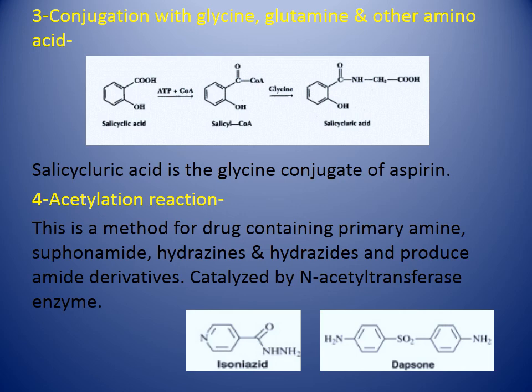The third type is conjugation with glycine, glutamine, and other amino acids. The example of salicylic acid is given, which forms salicyl coenzyme A, which on conjugation with glycine forms salicyluric acid. Salicyluric acid is the glycine conjugate of aspirin, which is the inactivated form of salicylic acid and can be excreted from the body.